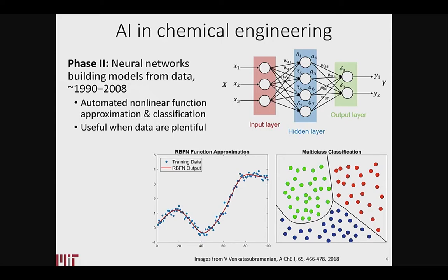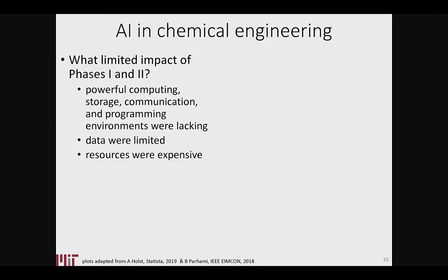Then there was the neural nets phase. Neural nets have been standard industrial practice in the process industry since the 90s, including Pavilion and others. It's always amazing when people don't refer to that — it's stuff you can just buy off the shelf. It's most useful when data are plentiful, and more and more data is becoming available, so they're becoming more and more tractable.